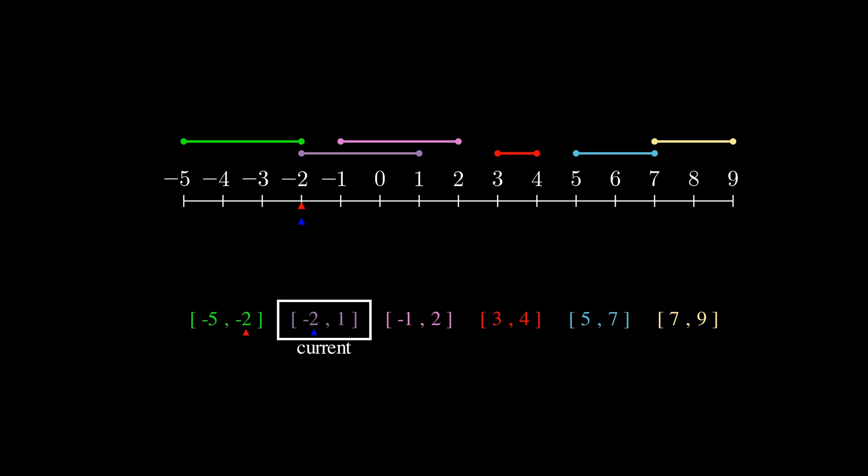So since they overlap, we want to merge them and then move on to the next. Now you'll notice here that our new previous interval that we'll compare our current interval to is the merged interval, and that merged interval's end is 1, which is greater than our current interval's start of negative 1. And as you can see on the number line, that means that these intervals clearly overlap, so we need to merge again. So that's three intervals that we just merged into one interval.